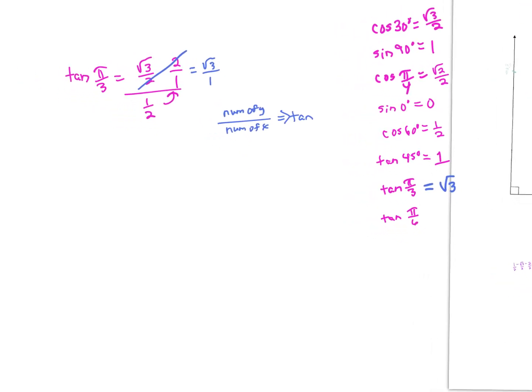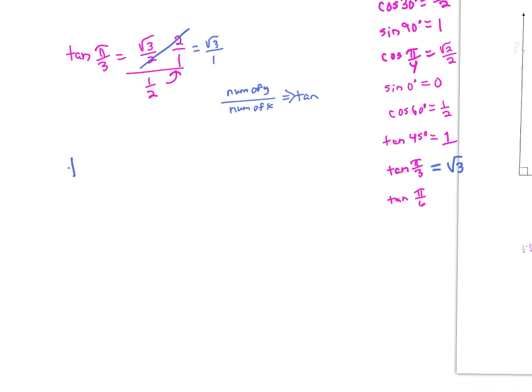Let's look at tangent of pi over 6 using the same trick. The numerator of the y-coordinate at pi over 6 is just 1.